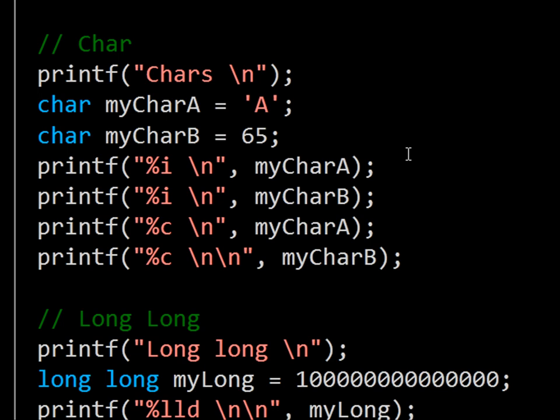For the record, escape characters, like our backslash n, are classified as single characters when they appear on their own. MycharB is initialised as the number 65, which is the numeric value of A.